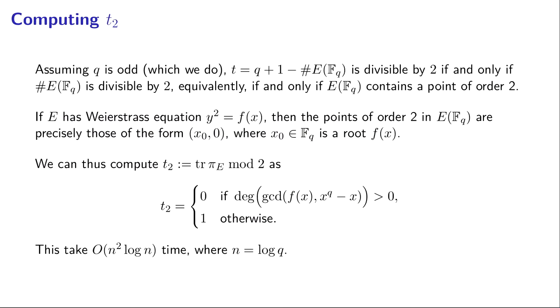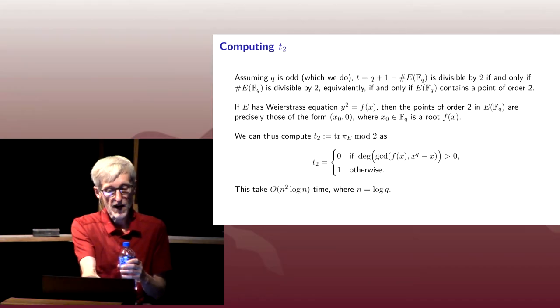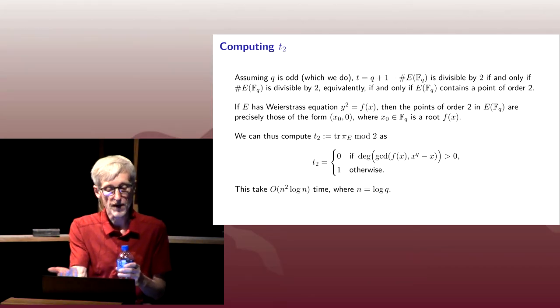We're going to assume that Q is odd for convenience, so we don't have to worry about characteristic 2. Although you can implement Schoof's algorithm even in characteristic 2, it's convenient to work with an equation in the form Y squared equals F of X. Let's even assume it's not characteristic 3, so our F of X will look like X cubed plus AX plus B.